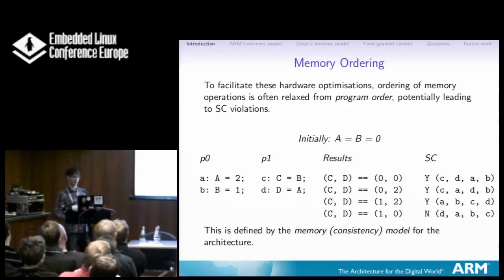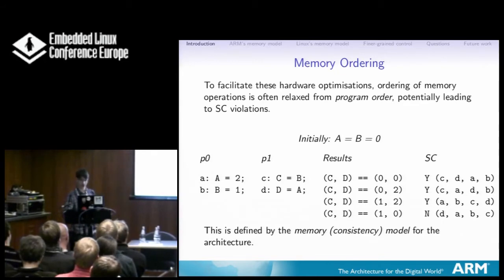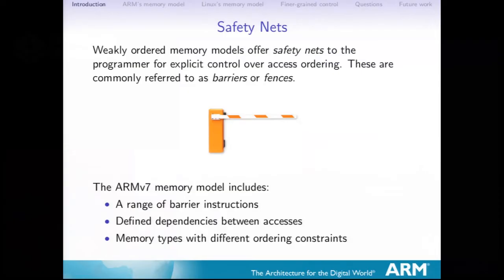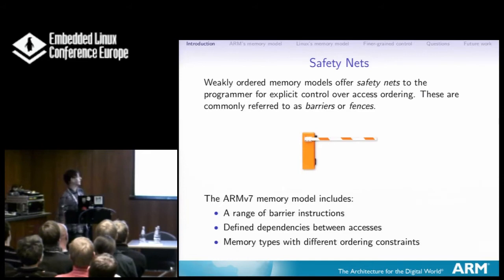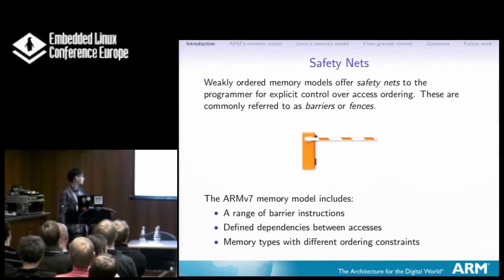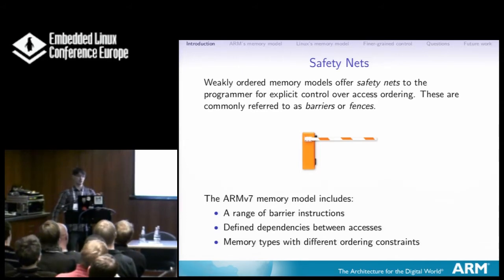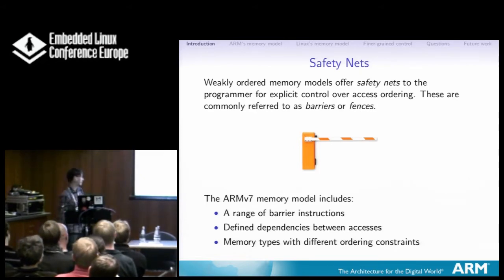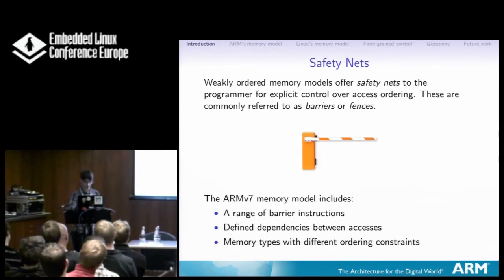Things like Pthreads and Java give you something approximating sequential consistency, so normally you don't need to worry about this. But for kernel developers, you do. The way you get around it is the architecture offers you safety nets — fences, or barriers — and you use these to enforce ordering when you need it, because most of the time you don't care about ordering; it's only in specific cases. As well as barrier instructions, there are defined dependencies. If you load the same address twice, that will happen in order — though not on Itanium, which is really weird.